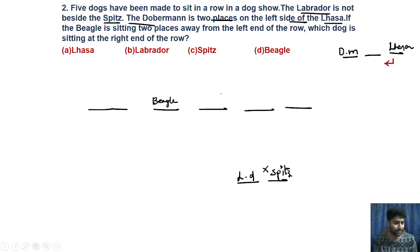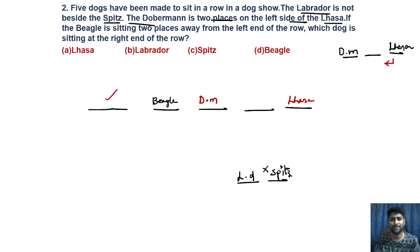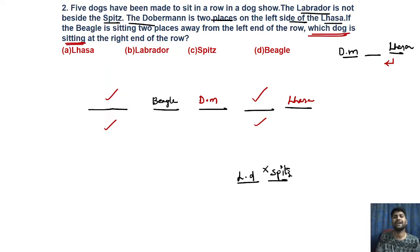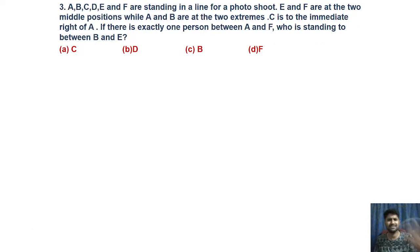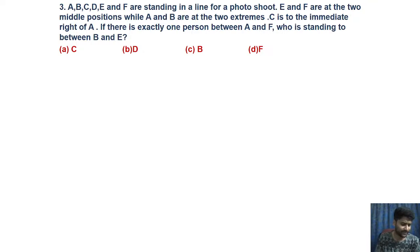If we place Doberman at the wrong position the arrangement fails, so we confirm Doberman correctly and then confirm Hasha's position. We are not sure whether Labrador or Spidge fills the remaining two positions, but the question only asks about the right end — and we can confirm that Hasha is at the right end. Even though two positions are uncertain, we can still answer the question. That is the second arrangement.